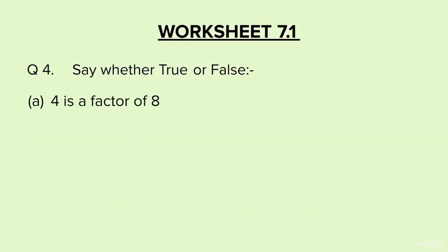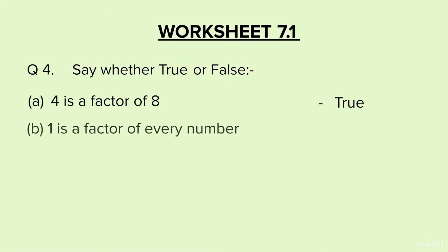A: 4 is a factor of 8 — we divide 8 by 4 and the remainder is 0, so this is True. B: 1 is a factor of every number — we have studied this in properties, this is True.